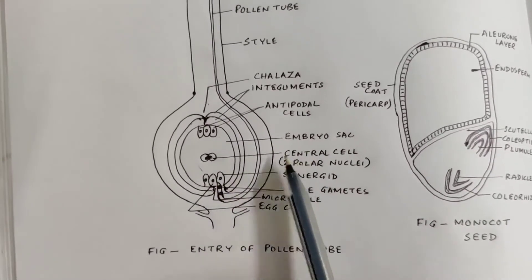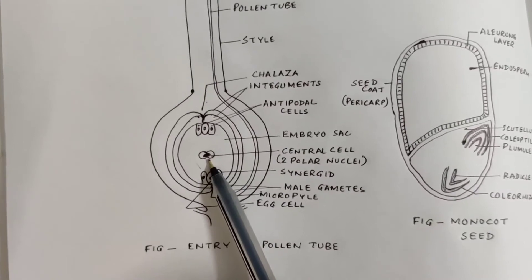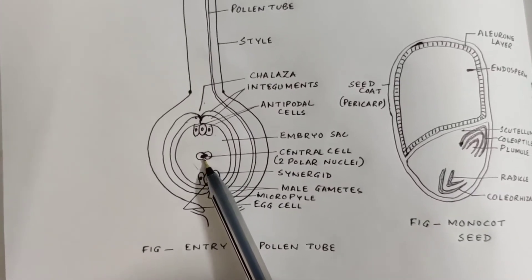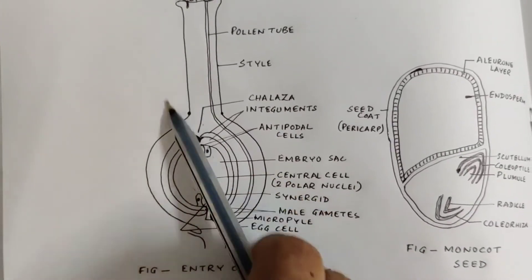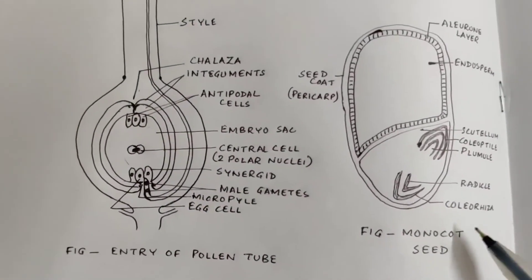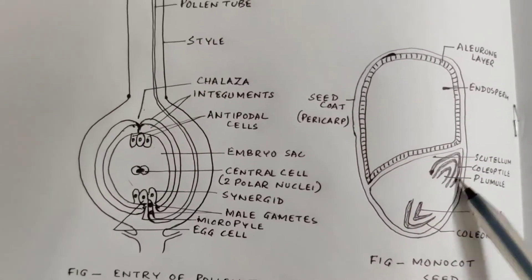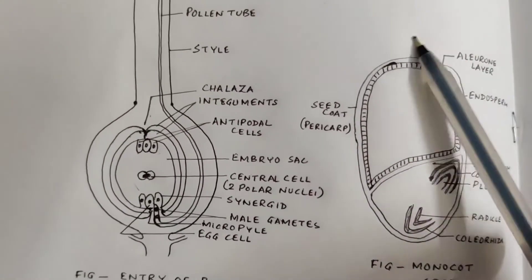One male gamete will fertilize the egg cell and another will fertilize the central cell. This process is called double fertilization.